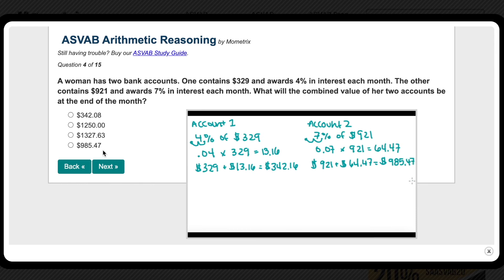Now, if you remember the original question, it was what is the combined value of both accounts? So let's add the balances of both accounts together, and we'll get $1,327.63, which is our answer.